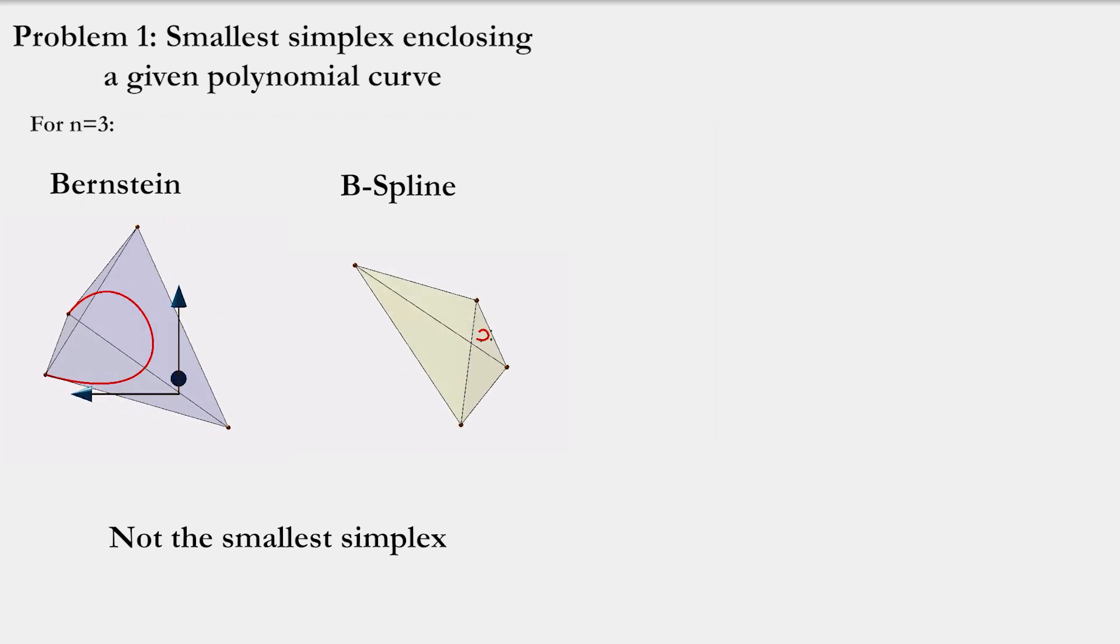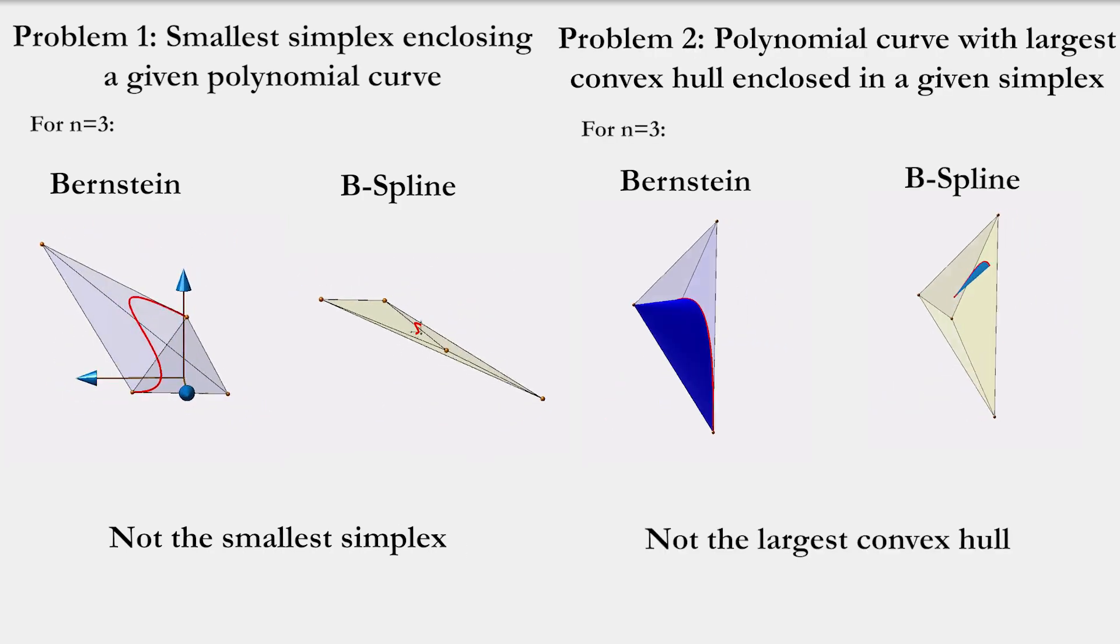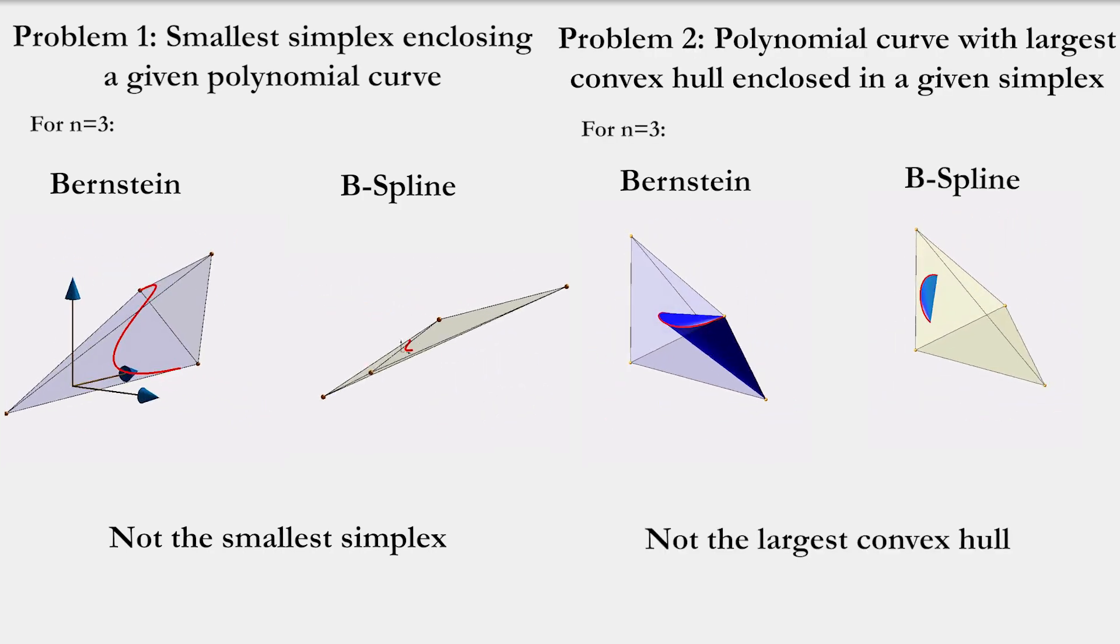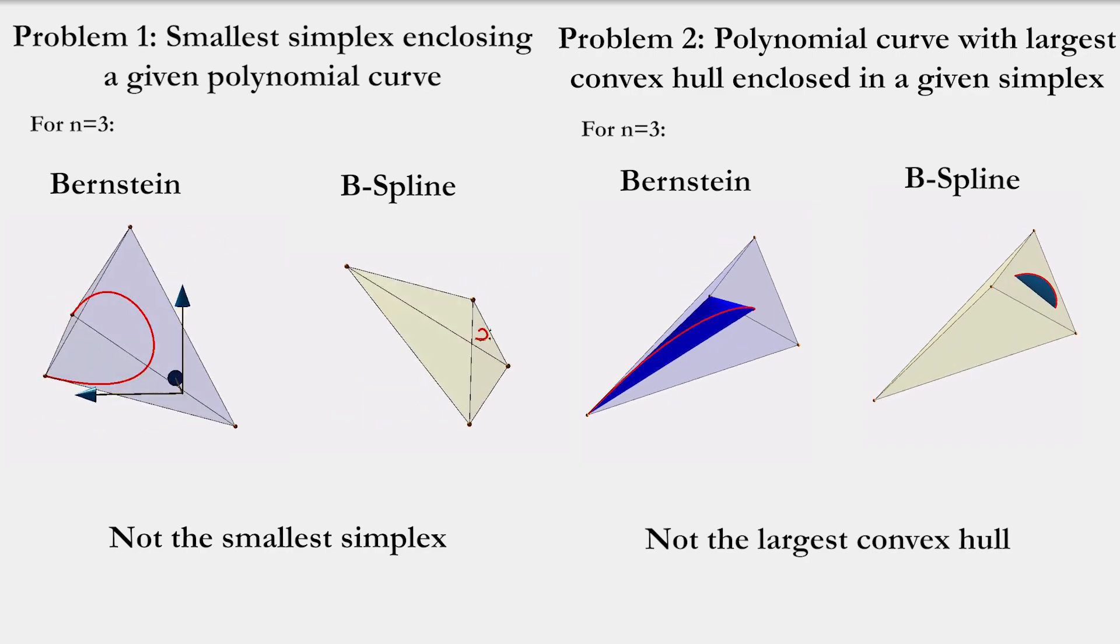Note that, for problem 1, the Bernstein and B-spline bases do not form the simplex with the smallest volume. Similarly, for problem 2, these bases do not generate the polynomial curve with largest convex hull.